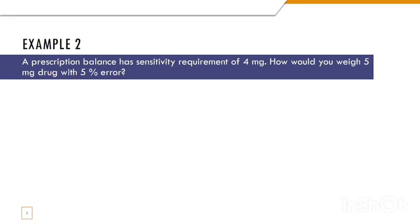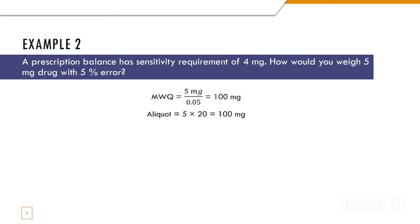In the next example, the sensitivity requirement is 5 mg, the drug needed is 5 mg, and the percentage error is 5%. The minimum weighable quantity is 5 mg divided by 0.05, which equals 100 mg. The aliquot is calculated by multiplying 5 mg by 20, giving us an aliquot of 100 mg.